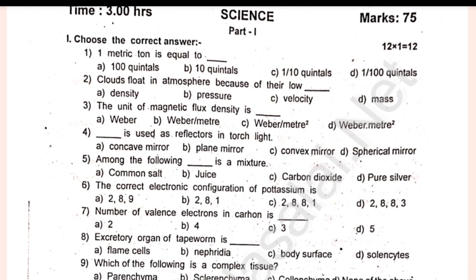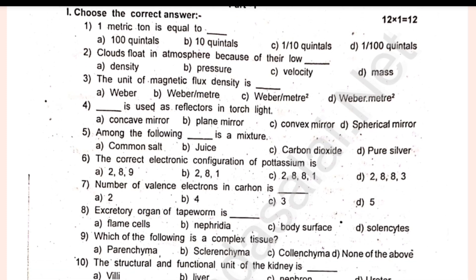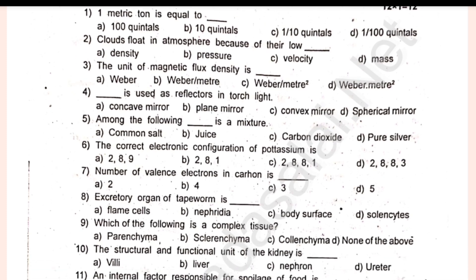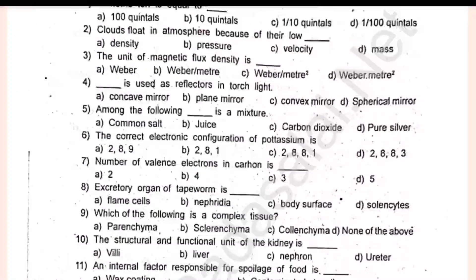1 mark each, 10 marks total. The unit of magnetic flux density is — among the following, dash is a mixture. Excretory organ of tapeworm is dash. Internal factor responsible for spoilage of food is dash. We will choose it. Next, Part 2 is 2 marks.